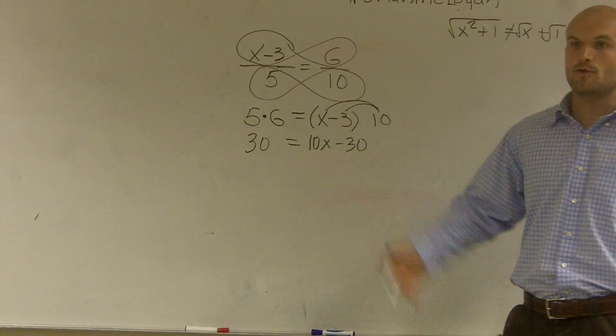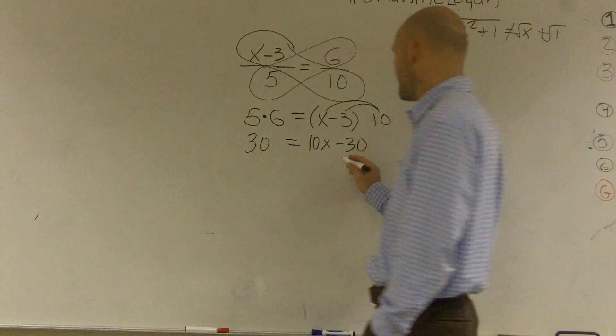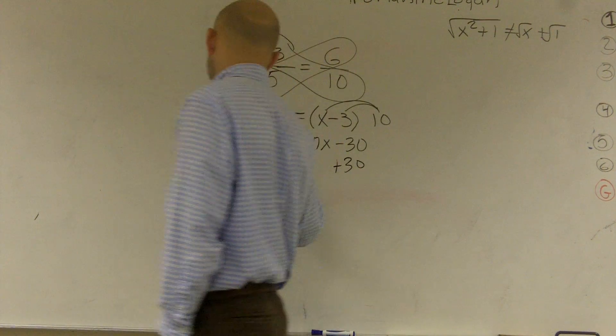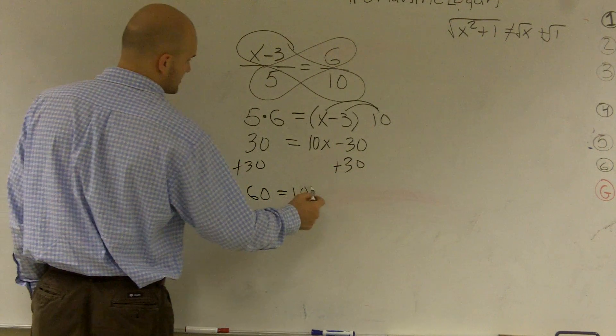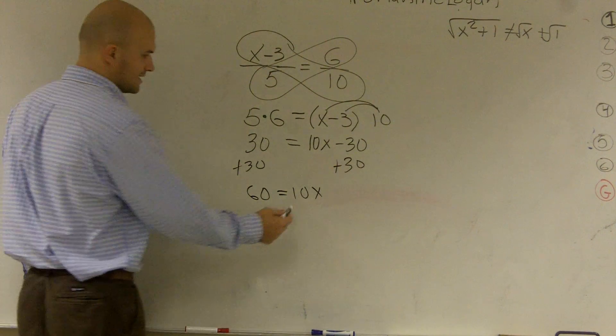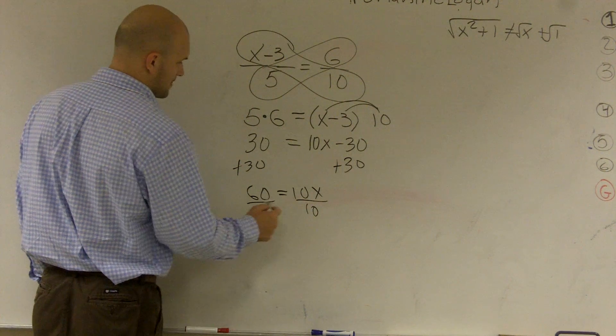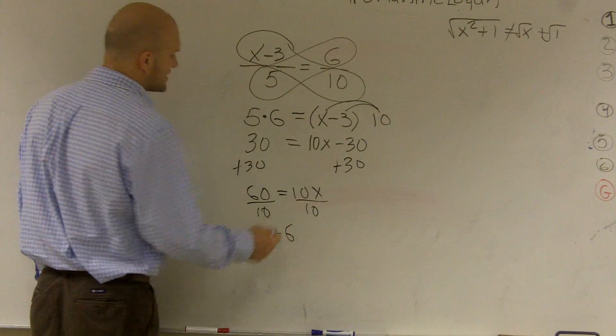Now I need to get everything away from the x. So the first thing I'm going to do is add 30. Therefore I obtain 60 equals 10x. Now the next thing I need to do is divide by 10. Therefore x equals 6.